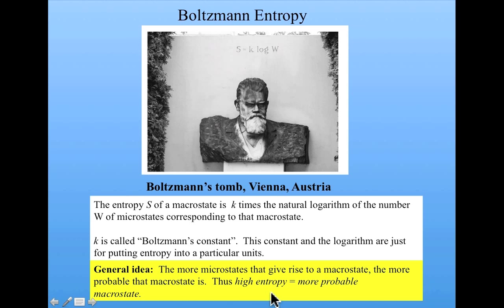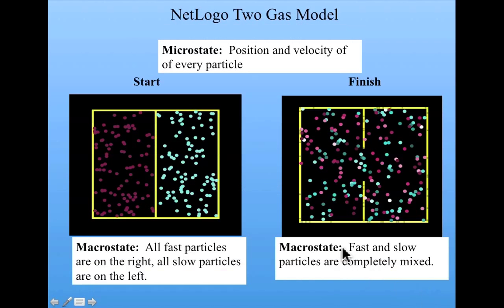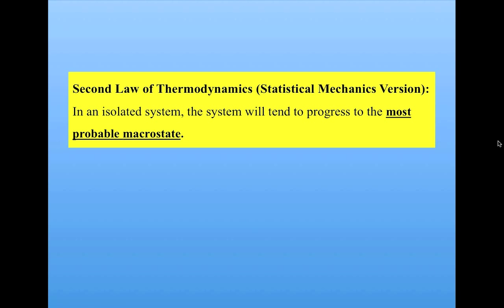Intuitively, high entropy just means a more probable macrostate. Or given our gas example, it's much more probable that if the door is open here, the molecules will mix than that they'll just stay or rearrange themselves back into the state in which all the fast ones are on the right and all the slow ones are on the left. It's much more probable that they'll be mixed and be in this state than in this state.